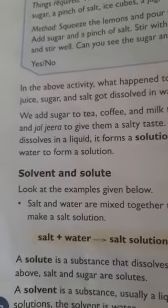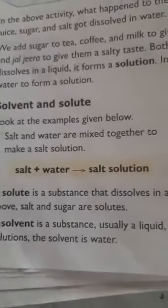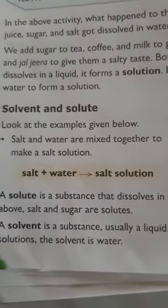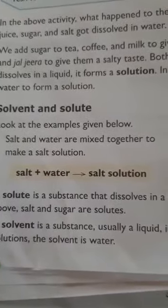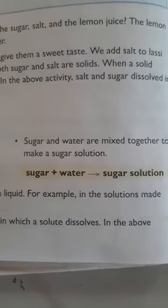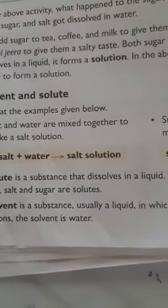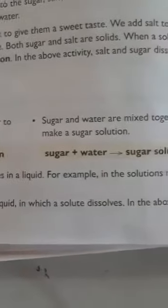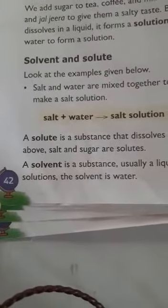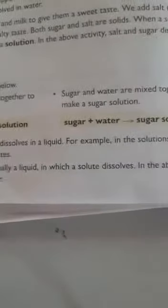Today we will see what is a solvent and what is a solute. Look at the examples given here: salt and water are mixed together to make a salt solution, and sugar and water are mixed together to make a sugar solution. Salt plus water gives a salt solution; sugar plus water gives a sugar solution. A solute is a substance that dissolves in a liquid — for example, in the solutions above, salt and sugar are solutes.